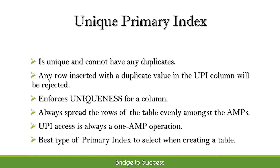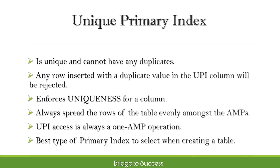A unique primary index is unique and cannot have any duplicates. If you try to insert a row with a primary index value that is already in the table, the row will be rejected. A UPI enforces uniqueness for a column. A unique primary index will always spread the rows of the table evenly amongst the AMPs. UPI access is always a 1AMP operation and hence the best type of primary index to select when creating a table.